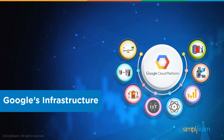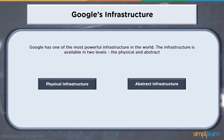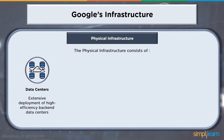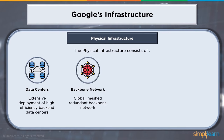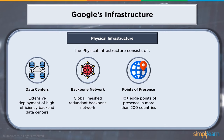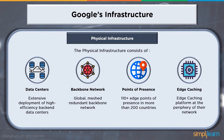When we talk about Google's infrastructure, Google has one of the most powerful infrastructures in the world, available in two levels: physical and abstract layers. Physical infrastructure consists of data centers with extensive high-efficiency backend development, a strong backbone network used by Google and offered as services via GCP, a global meshed redundant backbone network, 110-plus edge points of presence in more than 200 countries, and an edge caching platform at the periphery of their network.